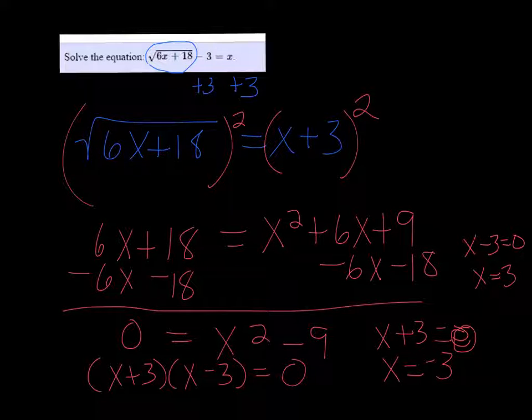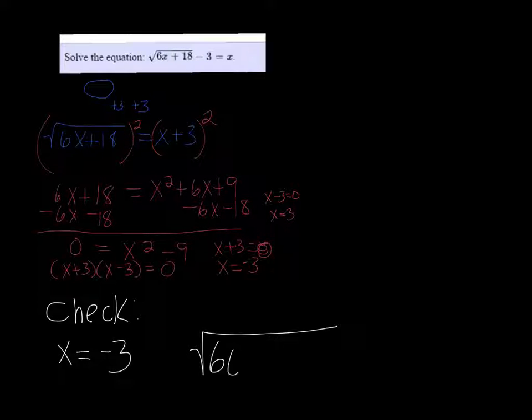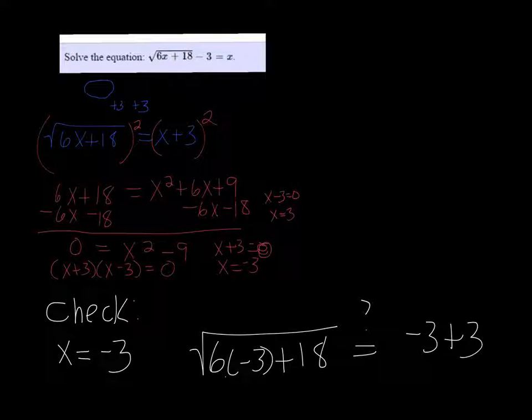But now we have to check, do both of those actually work? Here's the check part. Let's try x equals negative 3. Plugging it back in, we get 6 times negative 3 plus 18. Does that equal negative 3 plus 3? I get negative 18 plus 18, which is 0, and the right side is also 0, so yes, that one works. Let's try x equals positive 3.